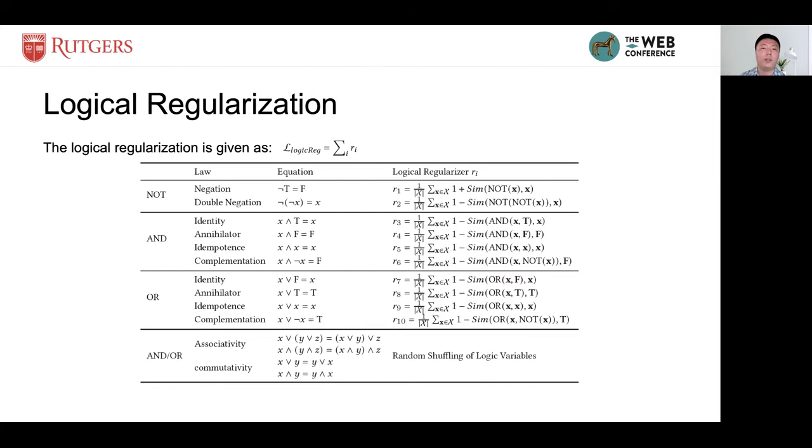We have defined three logical neural modules. However, by now, they are just plain neural networks. We need to guarantee that each logical module is really performing the expected logical operation in the latent space. To achieve this goal, we add a logical regularizer to the neural module to constrain their behavior.